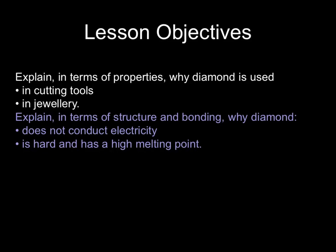Starting with one of the allotropes — diamond — we need to explain two of its uses in terms of the properties that diamond has, and then also explain the properties of diamond in terms of its structure and bonding.